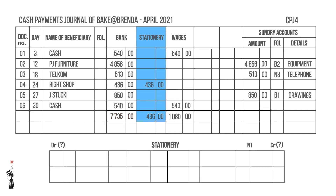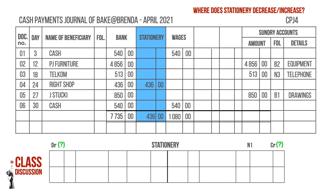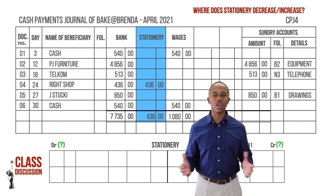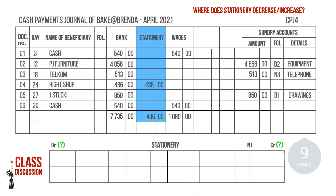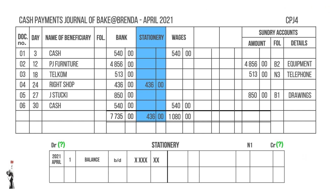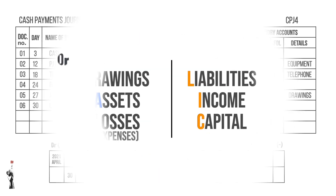For stationery, consider whether it increases or decreases. Pause this video and discuss this with your classmates. Stationery is an expense or a loss, so it will be recorded on the debit side according to our acronym DALEK.